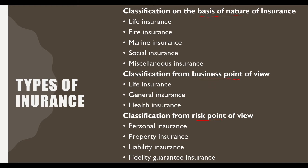Let's start with the first one — classification on the basis of nature of insurance. Based on the nature of insurance, we divide it into five categories: the first one is life insurance, then fire insurance, marine insurance, social insurance, and then miscellaneous.